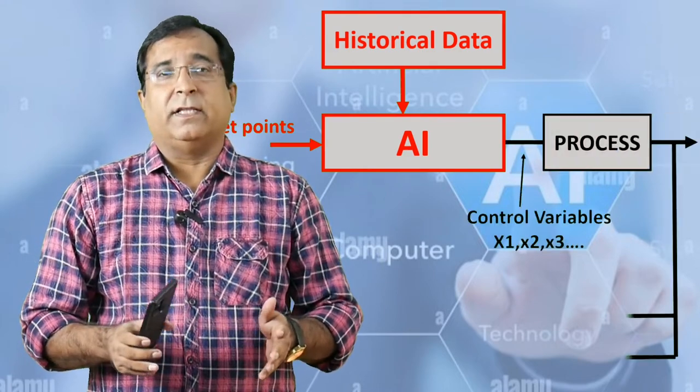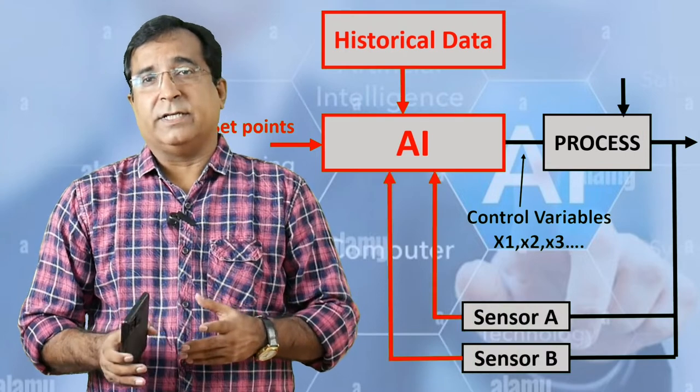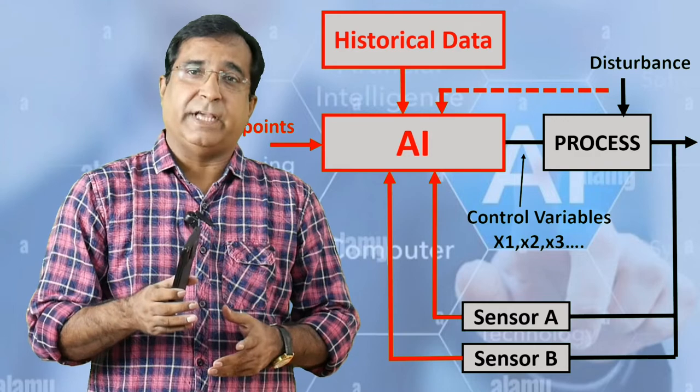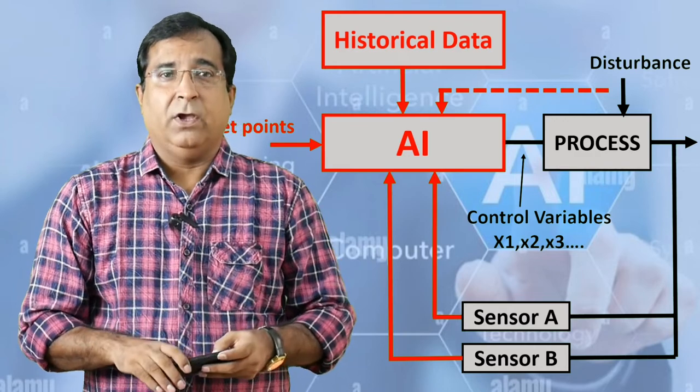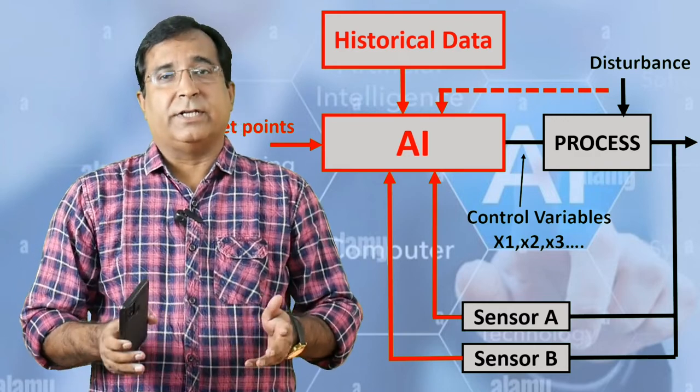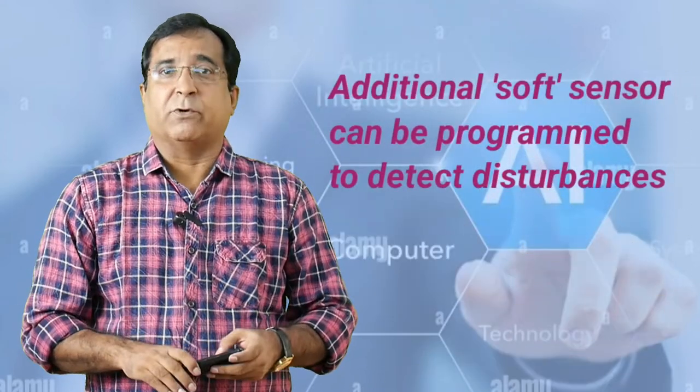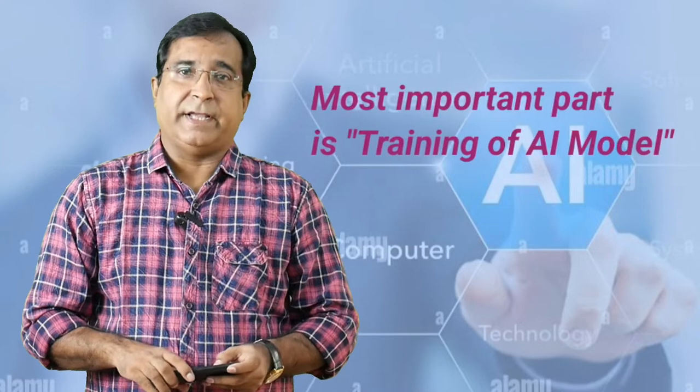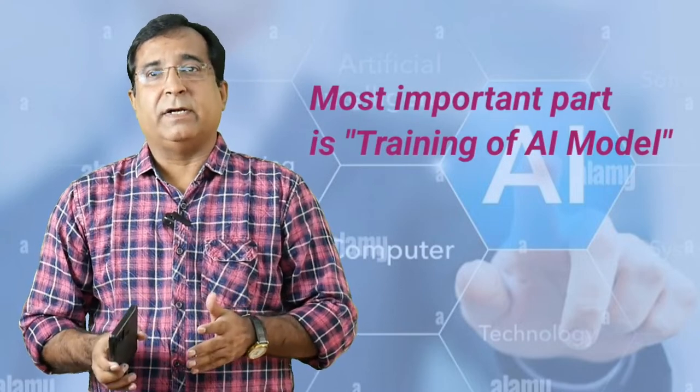These data are nothing but stored data on plant DCS server or historian server. The current state of the process is also fed to the AI model by field sensors. You can also add other additional sensors to detect process disturbance as well or soft sensors can be programmed to detect process disturbance. These multiple sensors help to predict the process disturbance dynamically to enable the trained AI model for generating the best parameter set online.